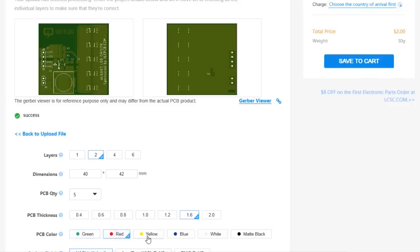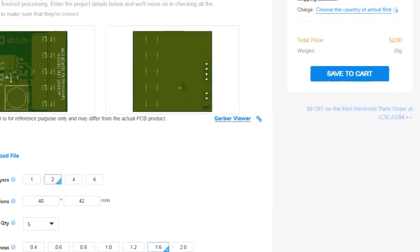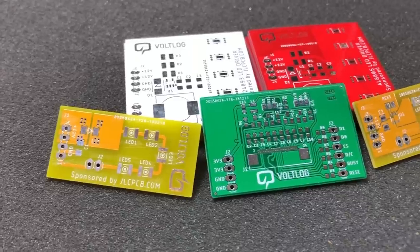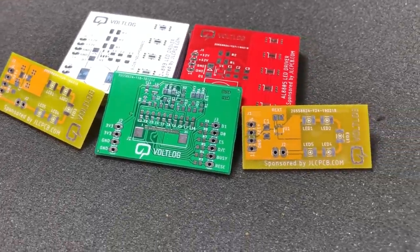And you know what else you can get for the low price of 2 dollars? A set of 10 printed circuit boards with 24 hours turnaround time from JLCPCB. You can even choose the solder mask color with no extra cost. That is the best offer on the market so check out their website, link below.